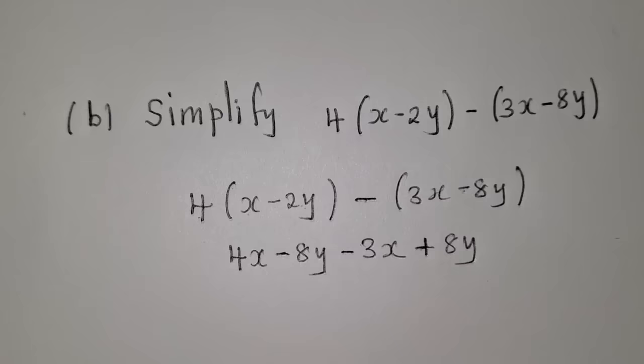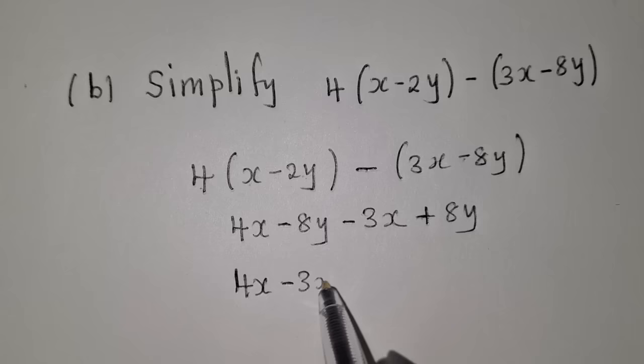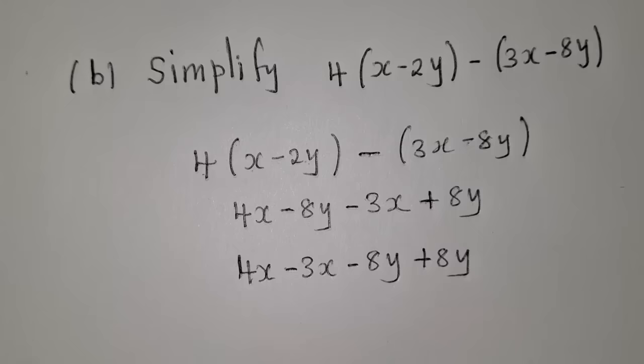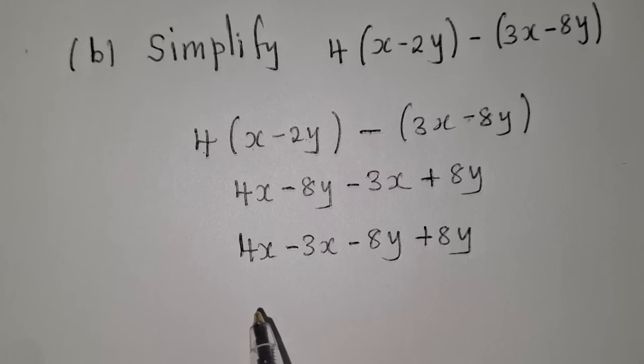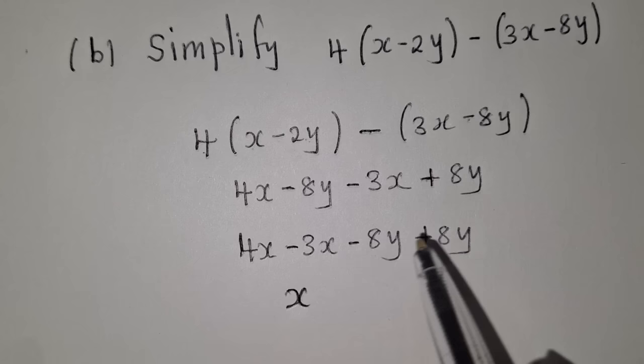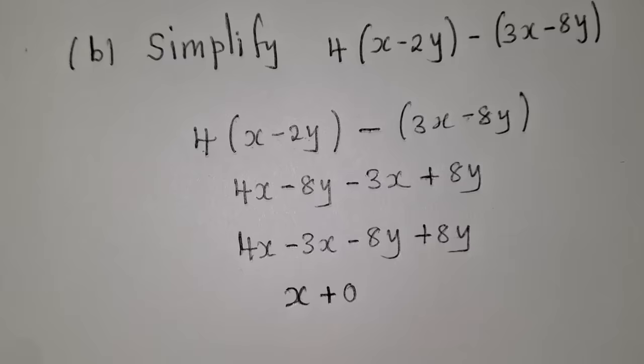Now arrange the work — that's the second step. We have 4x; anything with x is minus 3x. We are done with x's. We have negative 8y; anything with y is plus 8y. Now the last stage: 4x minus 3x is 1x, which is just x. Negative 8y plus 8y gives us 0. So it's x plus 0, which simplifies to x. Our answer for question 1b is x.